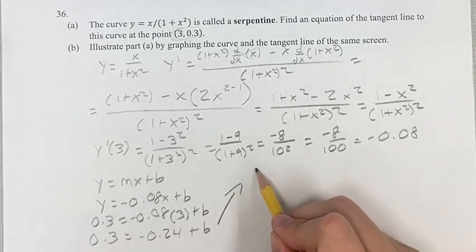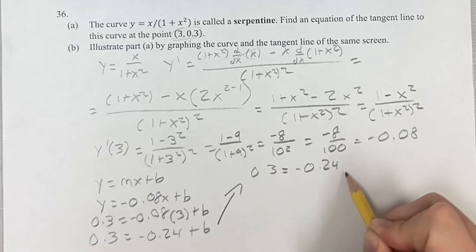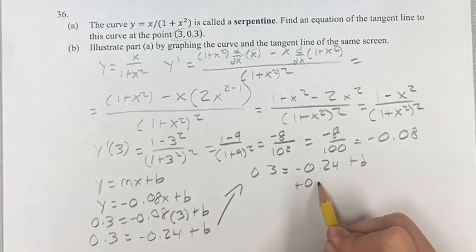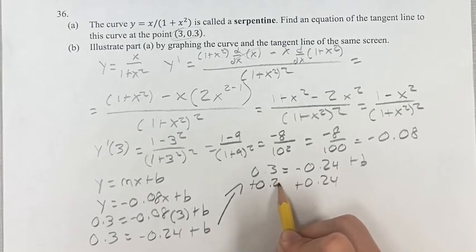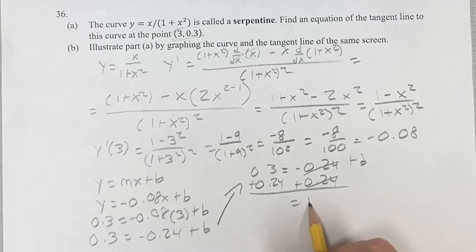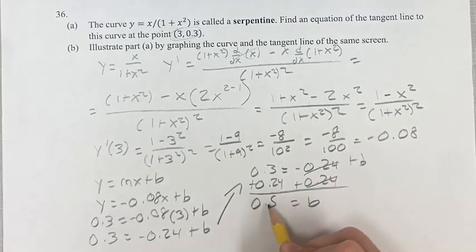Just rewriting it so we don't run out of space. If you add 0.24 to both sides, this cancels and you get b equals 0.3 plus 0.24 is 0.54.